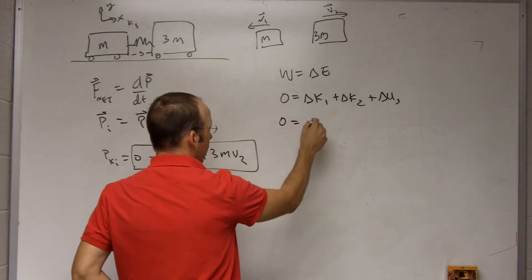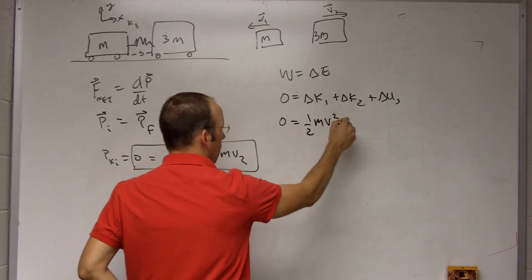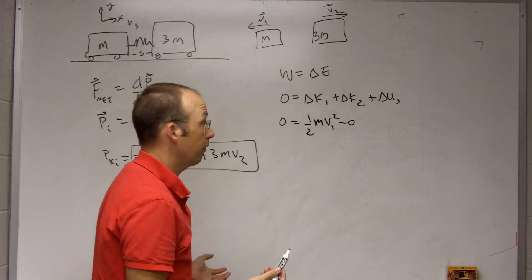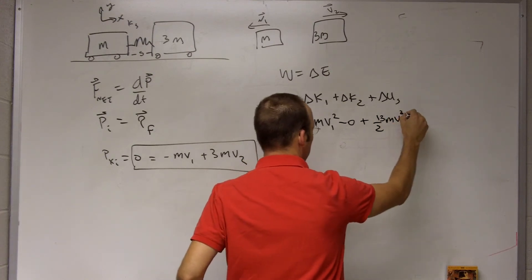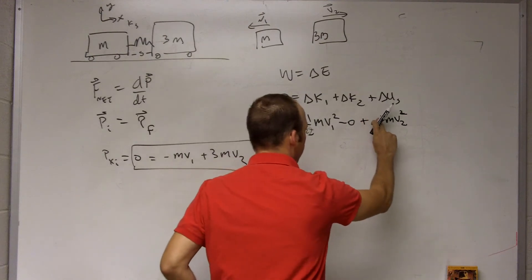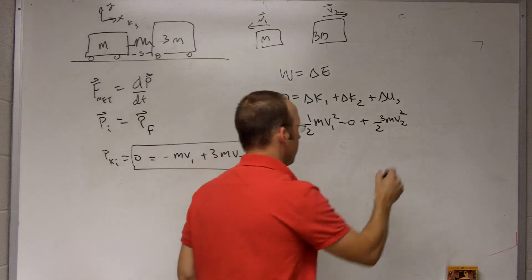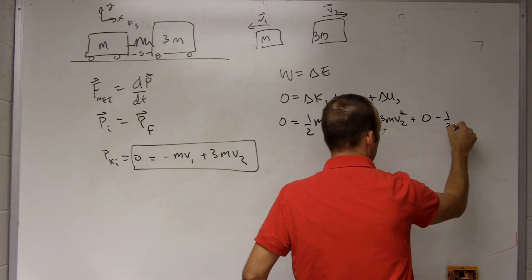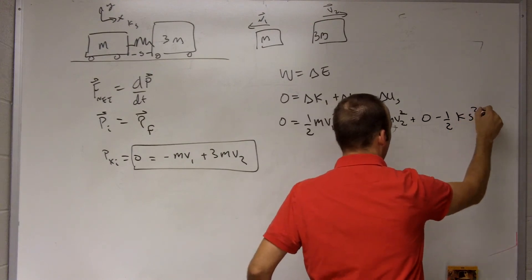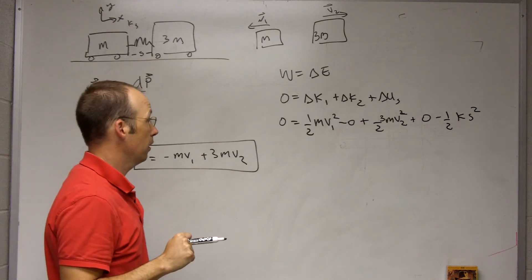Let's just write this down. Zero equals the final kinetic energy is going to be one-half for object one, V1 squared minus zero, because it started at rest. Plus one-half 3MV2 squared minus zero. And then, the final spring potential energy is zero minus the initial one-half KS squared. That's the amount of energy stored in a compressed spring.